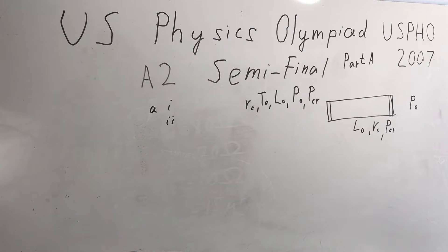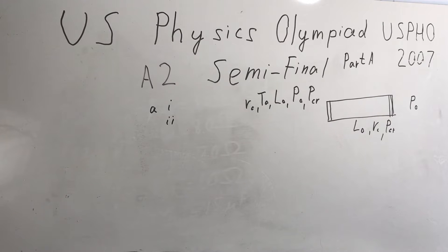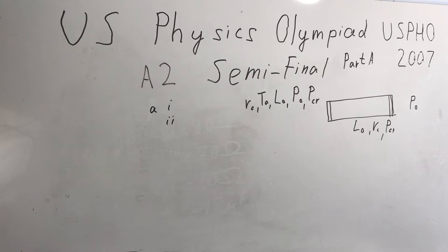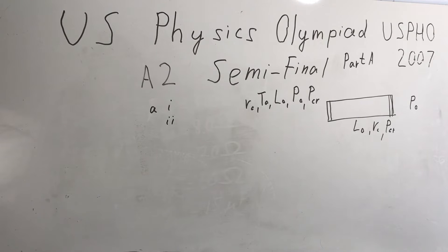Problem number A2. A simple gun can be made from a uniform cylinder of length L0 and inside radius RC. One end of the cylinder is sealed with a movable plunger and the other end is plugged with a cylindrical cork bullet. The bullet is held in place by friction with the walls of the cylinder. The pressure outside the cylinder is atmospheric pressure P0. The bullet will just start to slide out of the cylinder if the pressure inside exceeds P_critical.